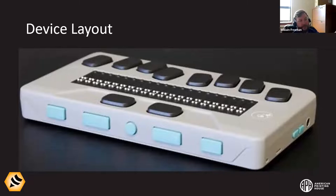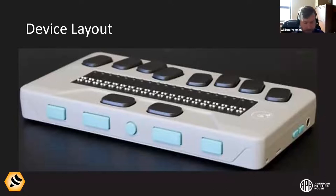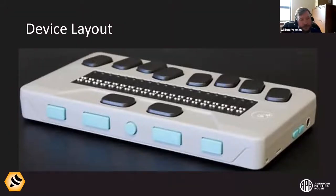Right now I've got a picture of the Chameleon up on the screen. You can clearly see the top of the device, the front edge, and the right edge. At the very top of the front face of the device is the Perkins-style keyboard. You've got your six Braille keys — dots one through six — flanked on either side by dot seven on the left and dot eight on the right. Those are traditionally used for computer Braille, which has really fallen out of fashion, though it's still available as an option.